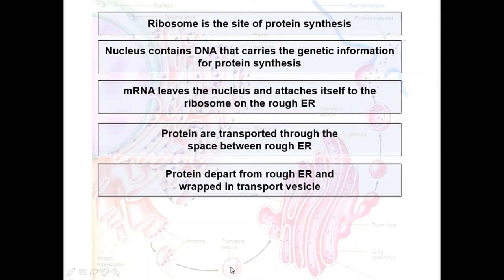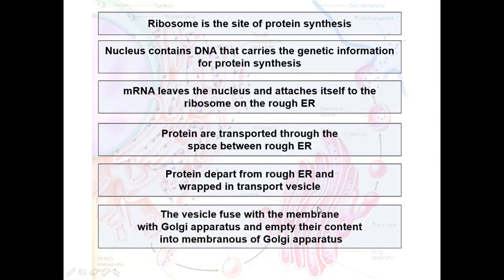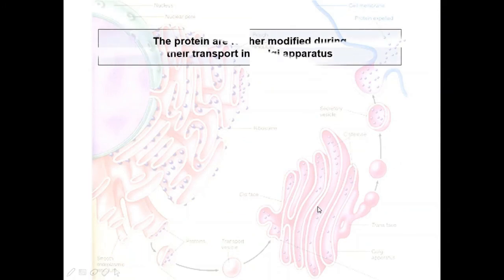The transport vesicles then fuse with the Golgi apparatus, releasing the proteins into the cavity. In the Golgi apparatus, the proteins are further modified and processed.